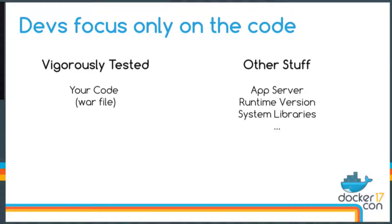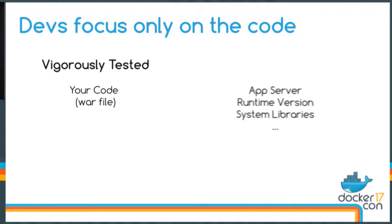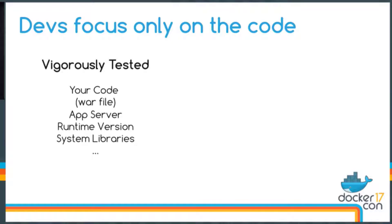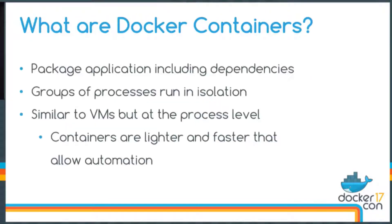As developers, we tend to focus on our code. We test our code, we version control, we have build and test automation, we create immutable code artifacts. And then we have all this other stuff that we kind of just take for granted — we assume it's going to be the same on every environment. However, if you've experienced 'works on my machine' syndrome before, you know that's not a great assumption. What would be great is if we can apply the same best practices to include everything our application depends on to run successfully. We can package this up into a single unit of abstraction — a Docker container.